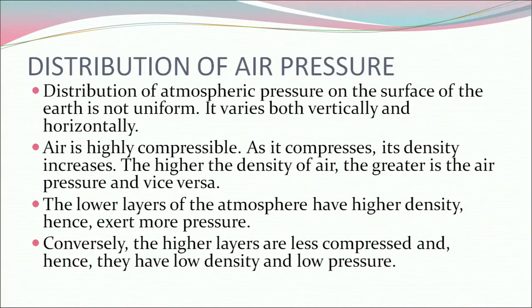Now let's understand the distribution of air pressure. Distribution of atmospheric pressure on the surface of the earth is not uniform. It varies both vertically and horizontally. Air is highly compressible — as it compresses, its density increases. The higher the density of air, the greater is the air pressure and vice versa. The lower layers of the atmosphere have higher density, hence exert more pressure. Conversely, the higher layers are less compressed and hence they have low density and low pressure.